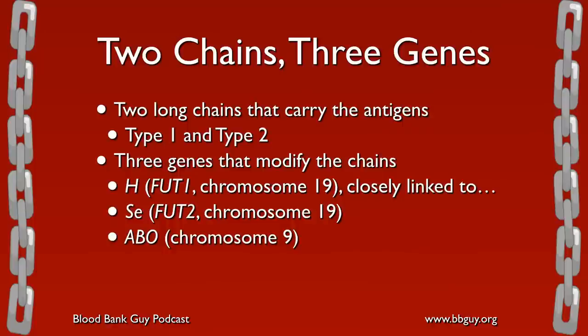The ABO blood group system is built on the actions of two chains and three genes. There are two long chains that carry these antigens, called type 1 chains and type 2 chains, and three genes that modify those chains. The first is the H gene, technically called the FUT1 gene, present on chromosome 19, closely linked to the secretor gene — the SE gene, technically called the FUT2 gene — also on chromosome 19. The ABO gene is present on chromosome 9.